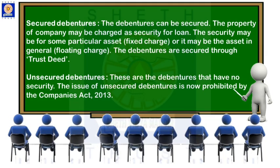Unsecured debentures: Companies Act 2013 strictly prohibits the company from issuing unsecured debentures. A company cannot issue unsecured debentures. Unsecured debentures are debentures which are not secured by anything.